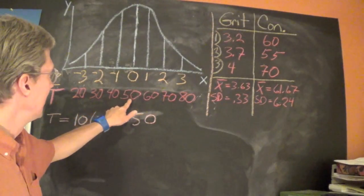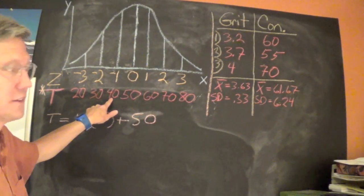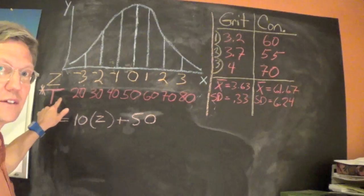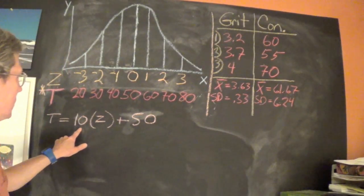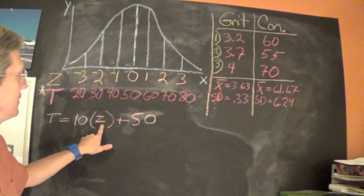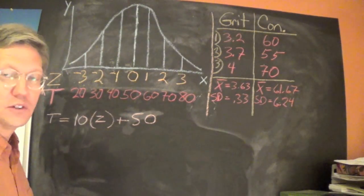So if the mean is 50 then it's 40 for one standard deviation below and then 30 and 20. To calculate T-score we take 10 times the Z-score plus 50.